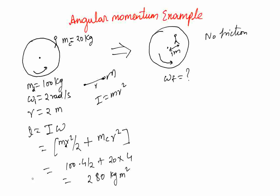Once we have the I, the moment of inertia, this is I. What is the initial angular momentum? Well, the initial angular momentum is going to be 280 multiplied by 2. The ω is 2. And this should be same as the final angular momentum.